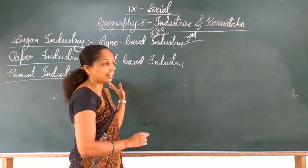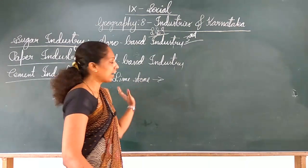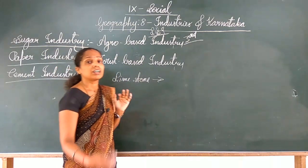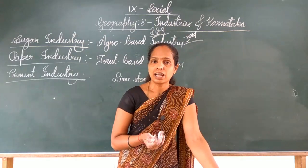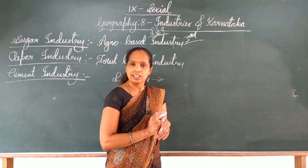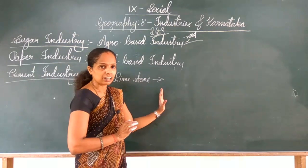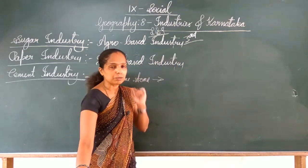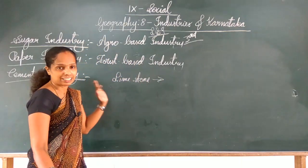Limestone is essential for the cement industry and is abundant in Karnataka. In addition, gypsum, water, and bauxite are also available in Karnataka. However, coal needs to be imported from other states, as it is scarce here. Other required factors include land, labour, capital, organisation, power supply, transport facility, market facility, and government policies.